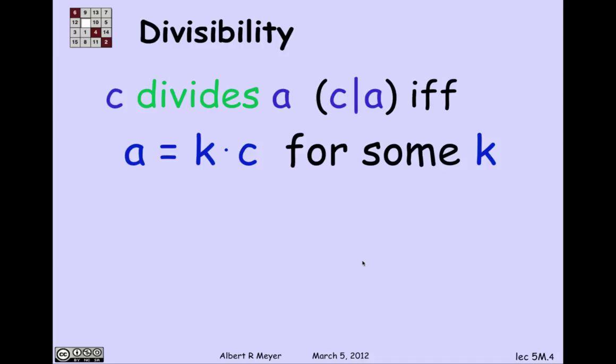A key relation that we're going to be looking at today is the relation of divisibility between integers. By the way, all of the variables for the next week or so are going to be understood to range over the integers. So when I say number, I mean integer. I'm going to define C divides A using this vertical bar notation. It's read as C divides A, if and only if A equals K times C for some K. And there are a variety of synonyms. C divides A is to say that A is a multiple of C and C is a divisor of A.